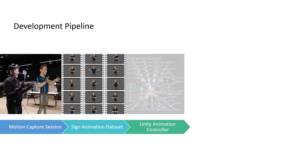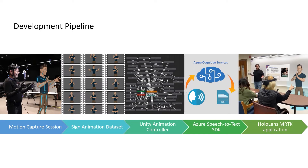The development pipeline includes five major steps. First, motion capture session. Second, create the animation dataset. Third, build Unity Animation Controller. Fourth, develop with Microsoft Azure Cognitive Services speech-to-text SDK. Last, build the system through Unity with Microsoft Mixed Reality Toolkit.